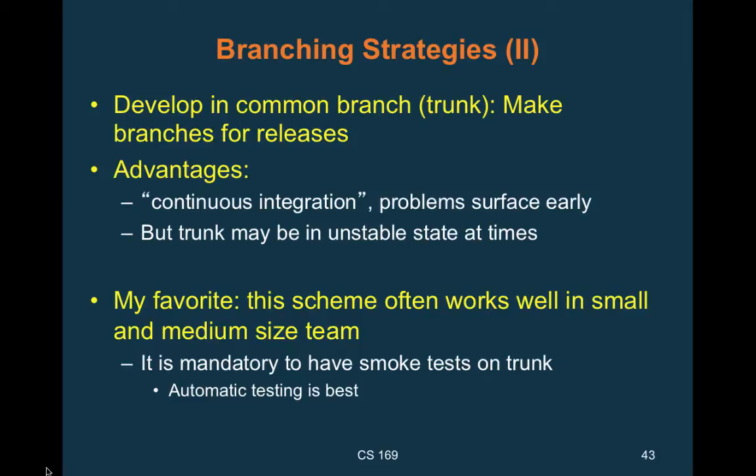Student question: So in the first strategy, trunk is for releases and branches for development, while here it's reversed — a development trunk and release branches? Yes, exactly. There's also a third popular model — the pull request model for open source projects, where there's an asymmetry: you can propose a contribution to the Linux kernel, but you can't merge it directly; someone else takes care of bringing it in.